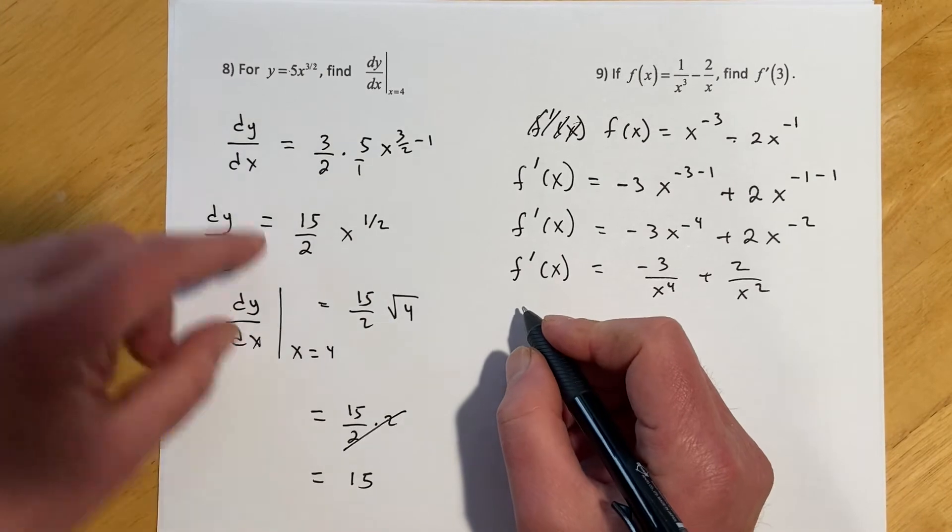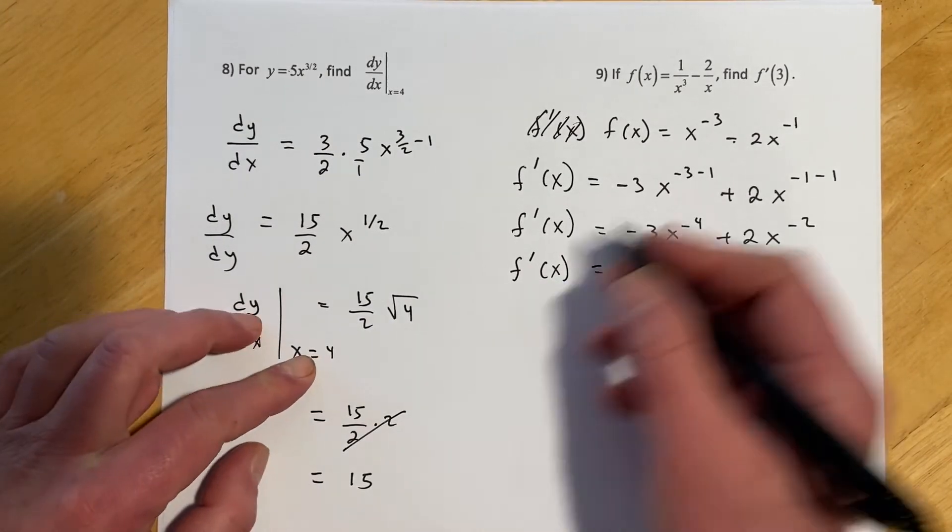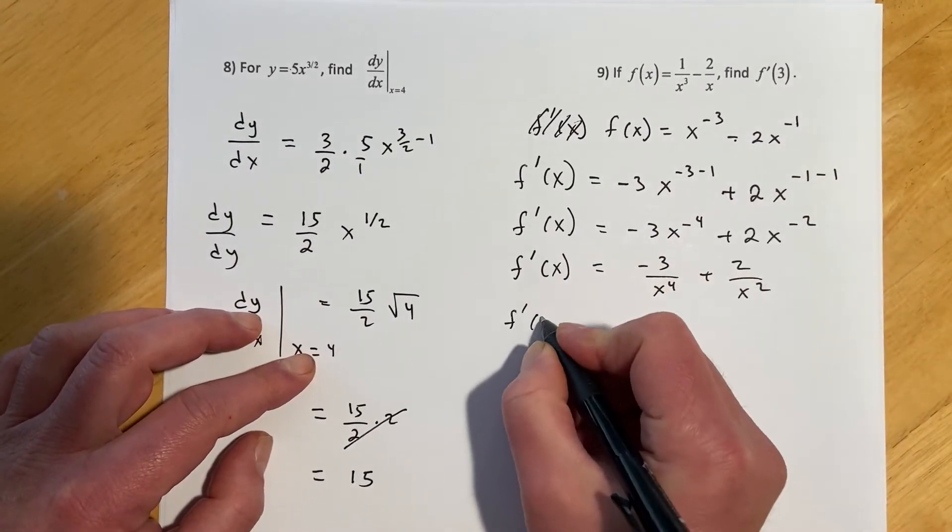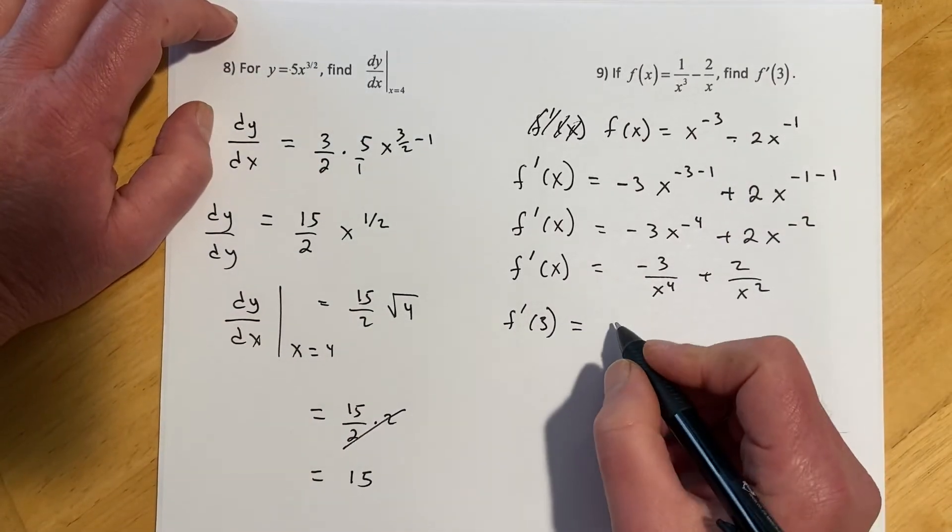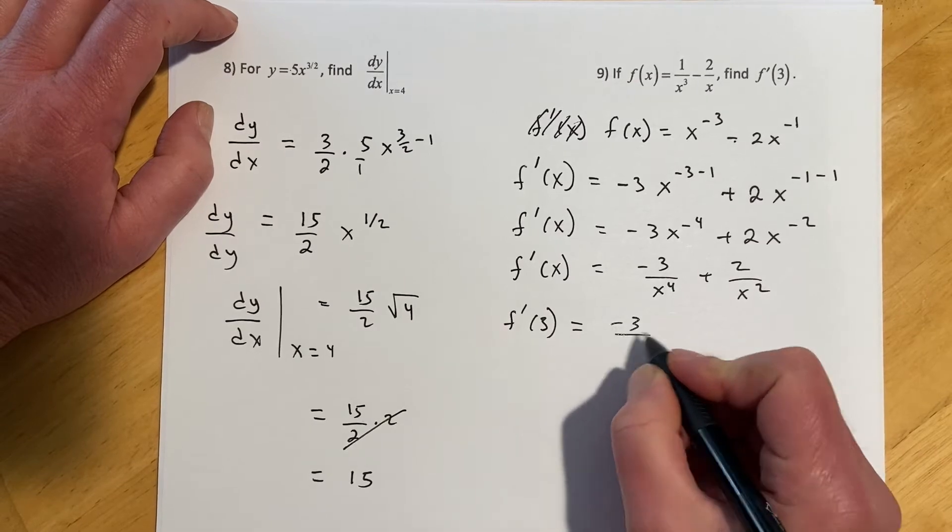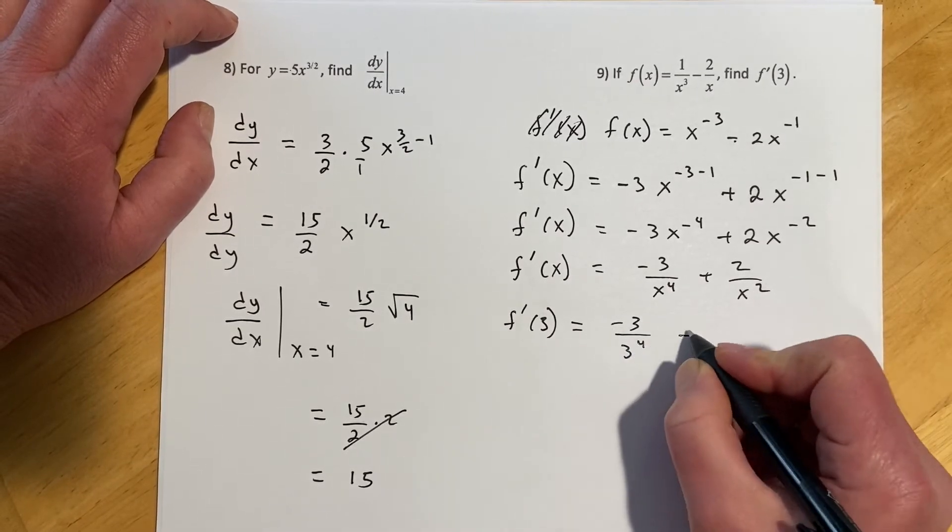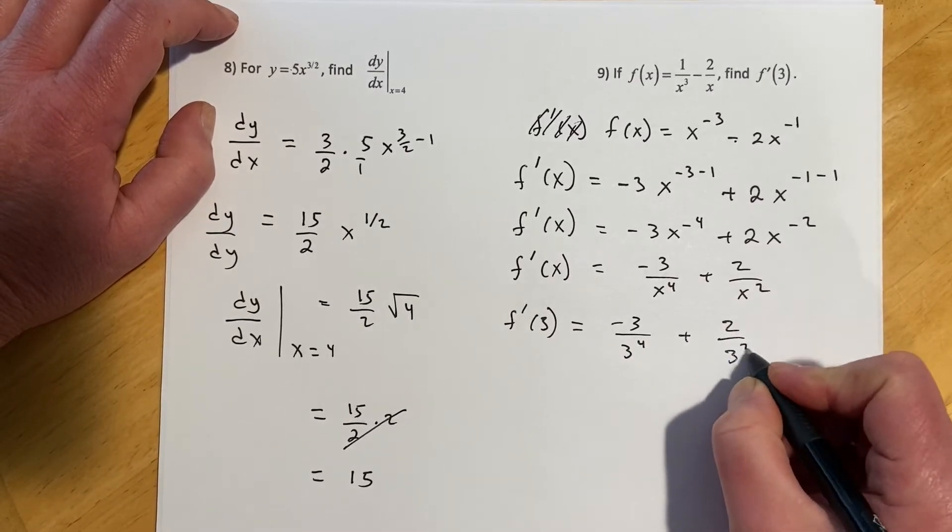So now I'm just finding, so instead of writing the function evaluated at, I get to write f prime of 3, which makes you appreciate function notation now. So we're just going to go negative 3 over 3 to the 4th, plus 2 over 3 squared.